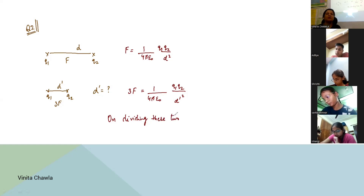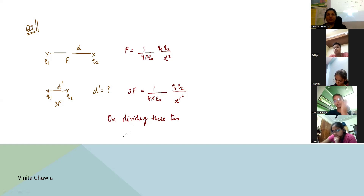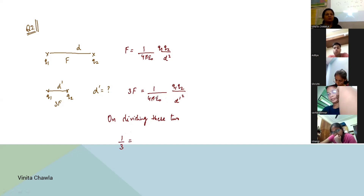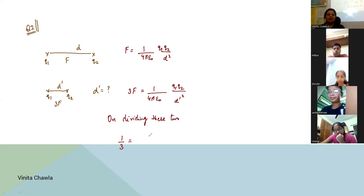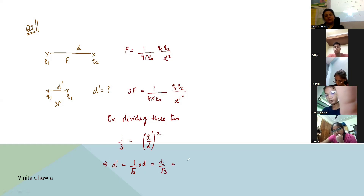Since the medium is the same, epsilon cancels. On dividing: F/3F = 1/3, and 1/(4π epsilon) and Q1 Q2 also cancel, leaving d′²/d² = 1/3. So d′ = d/√3, or equivalently d′ = √3·d / 3. You can rationalize if you want — it's your choice.